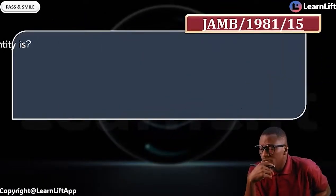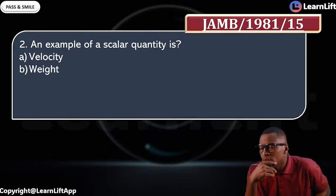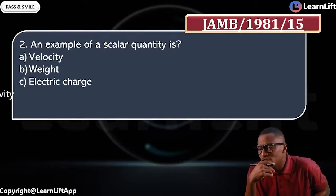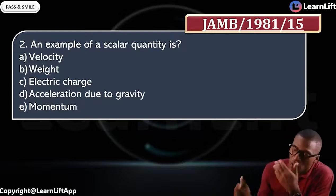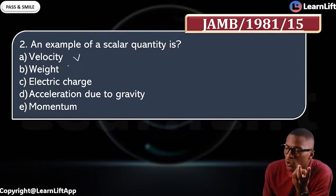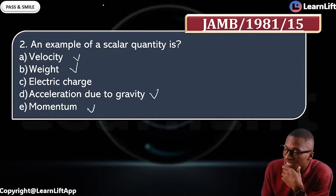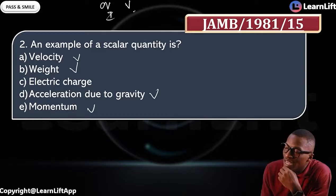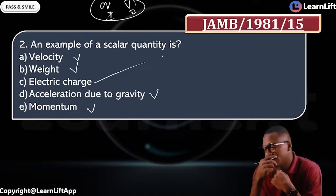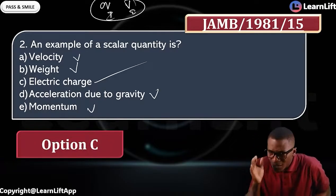JAMB 1981 question 15: which of the following is a scalar quantity? Option A — velocity, B — weight, C — electric charge, D — acceleration due to gravity, E — momentum. Velocity is vector, weight is vector, acceleration due to gravity is vector, momentum is vector. But electric charge is scalar — since charge, current, voltage, and EMF are all scalars. So electric charge is a scalar, making option C the answer.